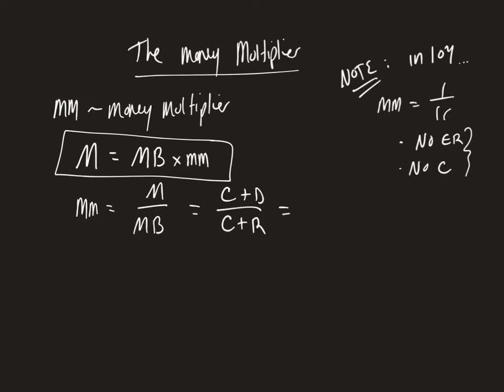What we're going to do in order to complete this money multiplier process is we're going to keep the numerator the same, but the denominator, we're going to expand reserves. So instead of reserves, we're going to just make that the required reserves plus the excess reserves.